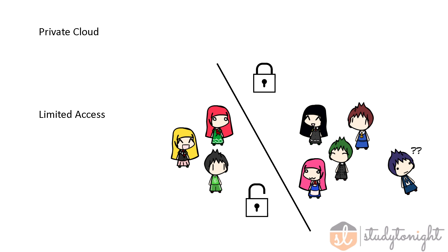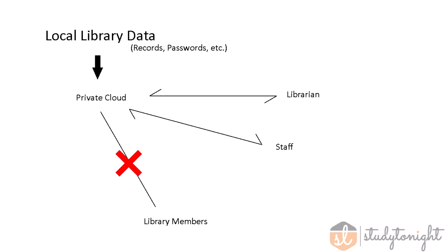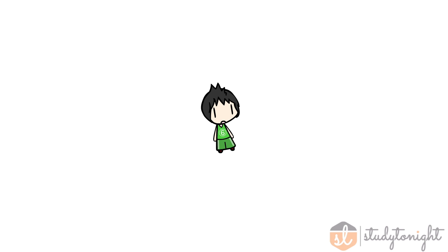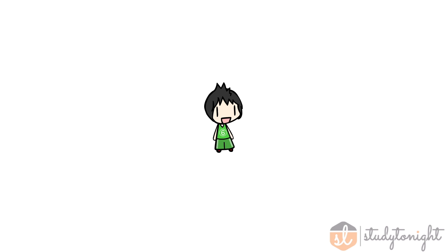A private cloud is a cloud that only certain people can access. If your local library stores its databases and records online, it's using a private cloud, since only people like the librarians and staff can access them. They're usually more on the expensive side, since it's the client doing all the setup work.